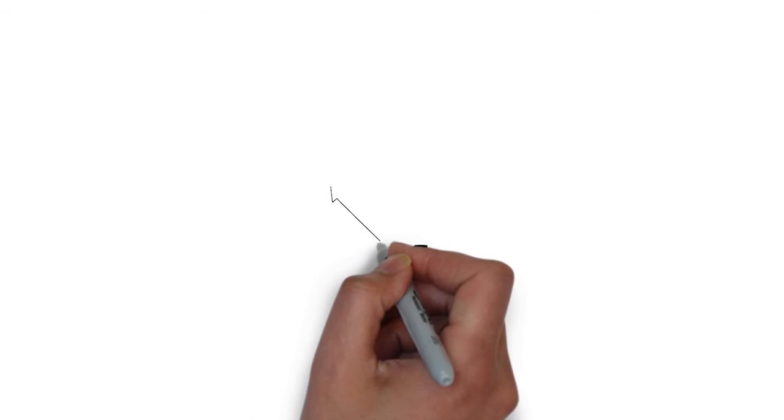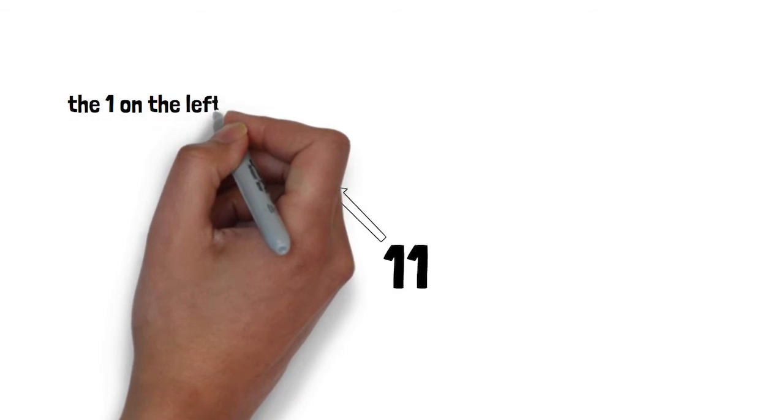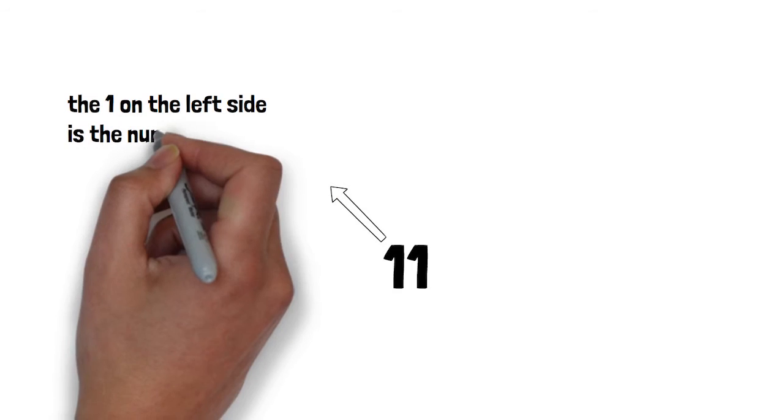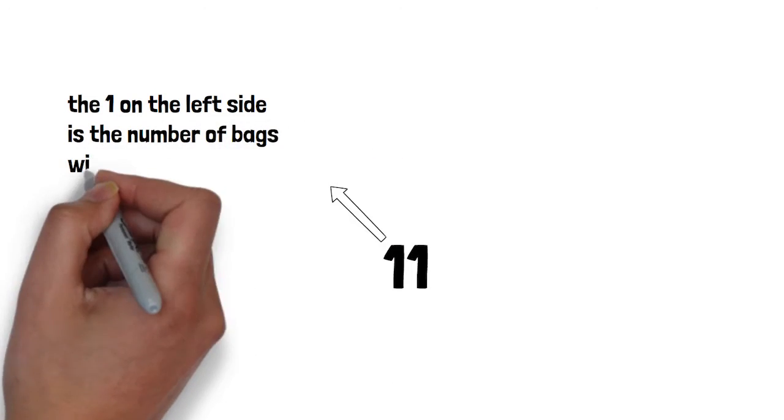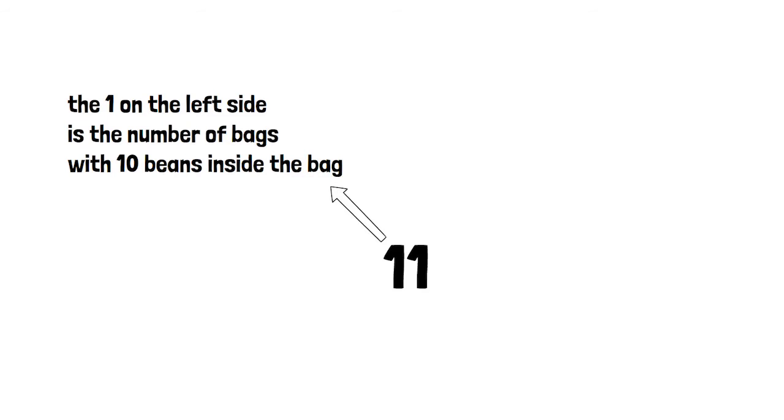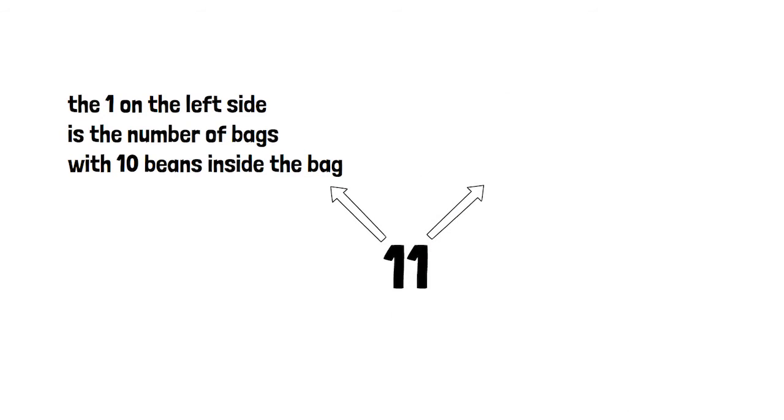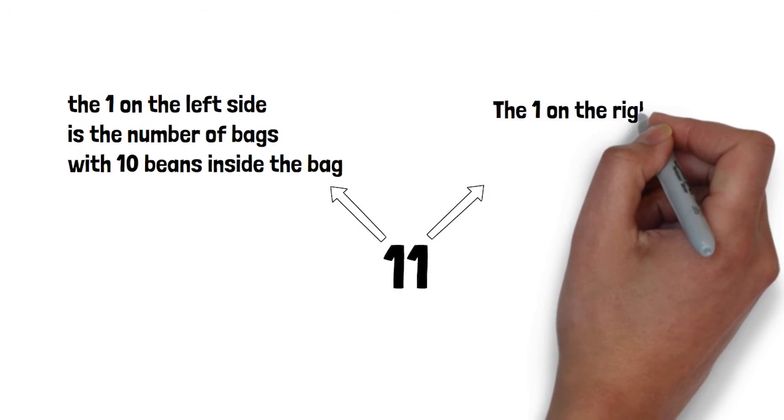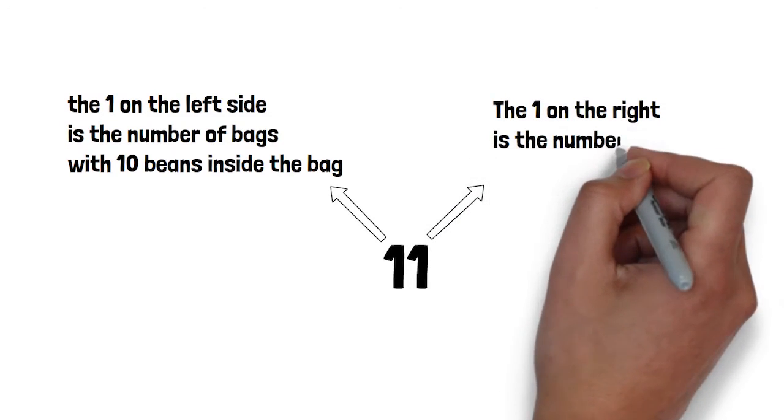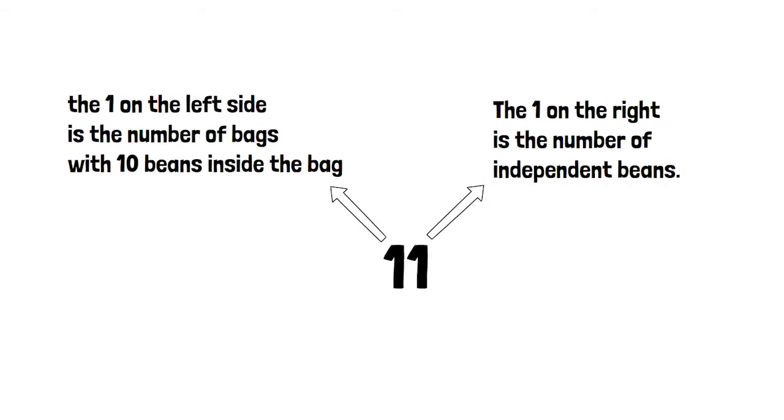Suppose we write a number like 11. The 1 on the left side is the number of bags. That is the number of bags with 10 beans inside the bag. So, in the case of 11, it is only one bag with 10 beans. That is what the number on the left side indicates. Similarly, the number on the right side is the number of independent beans. In 11, there is only one independent bean outside the bag. So, that is what the 1 on the right side indicates.